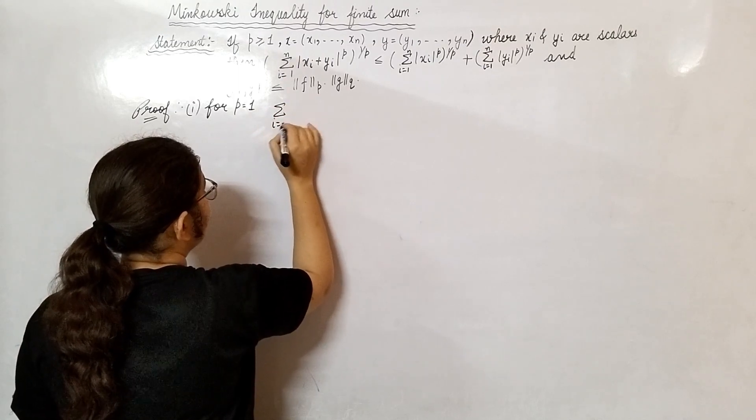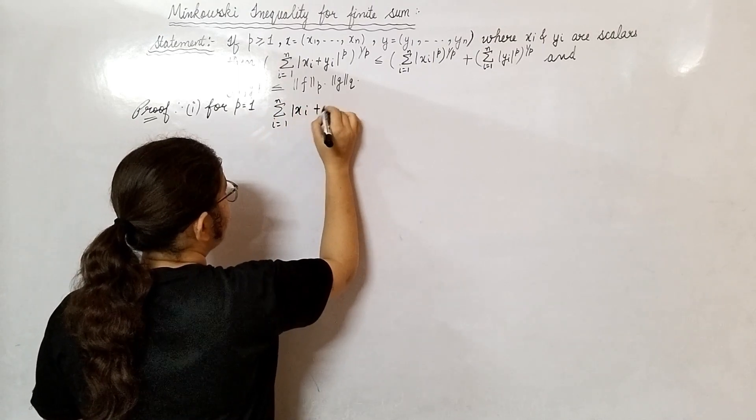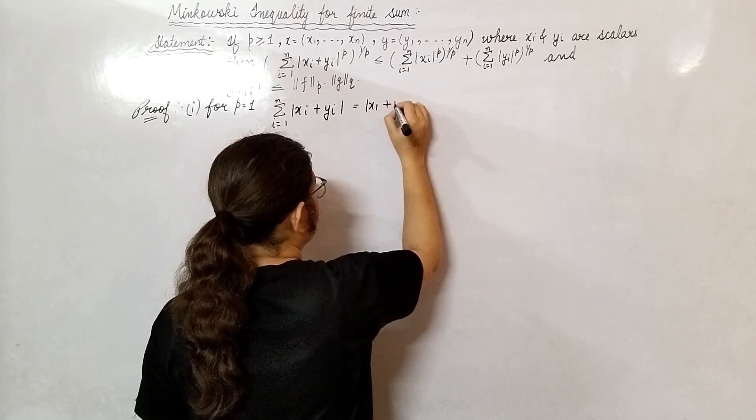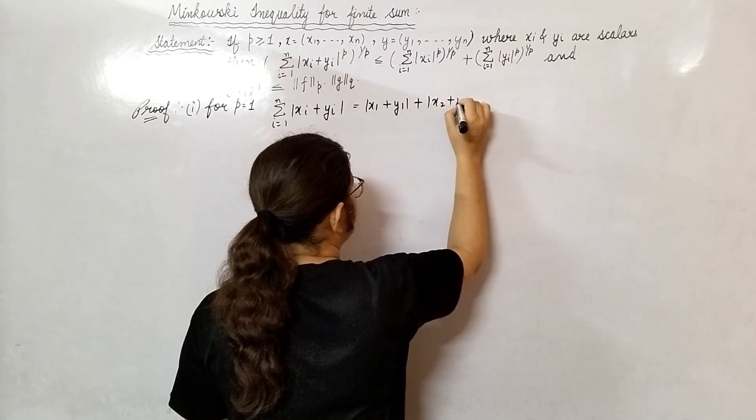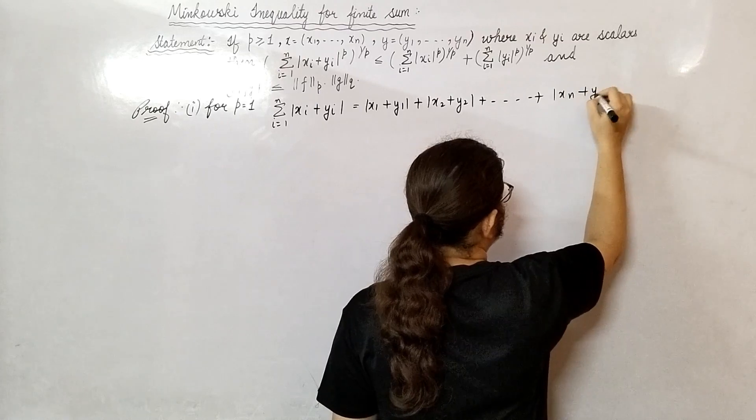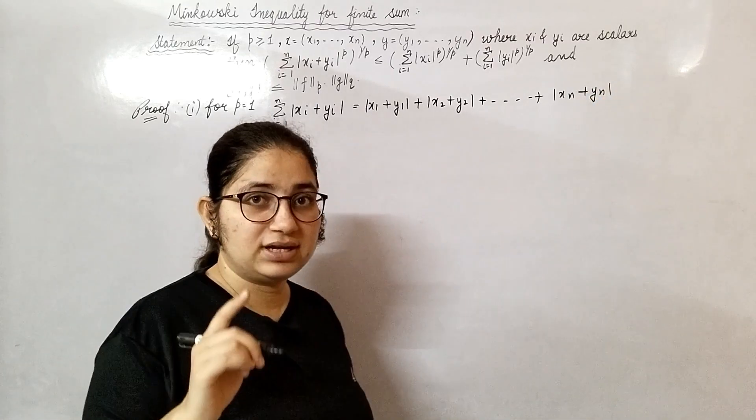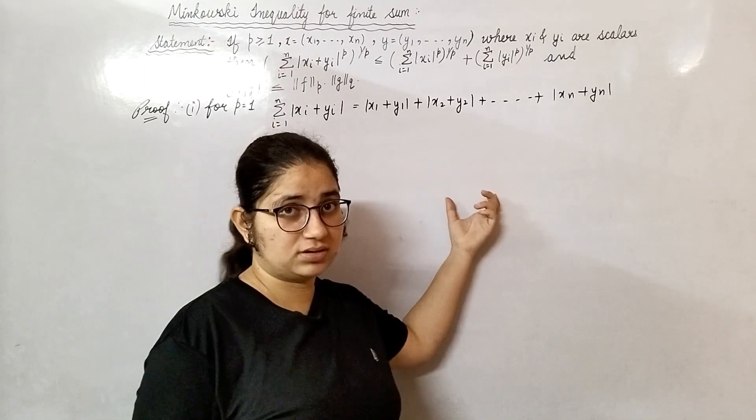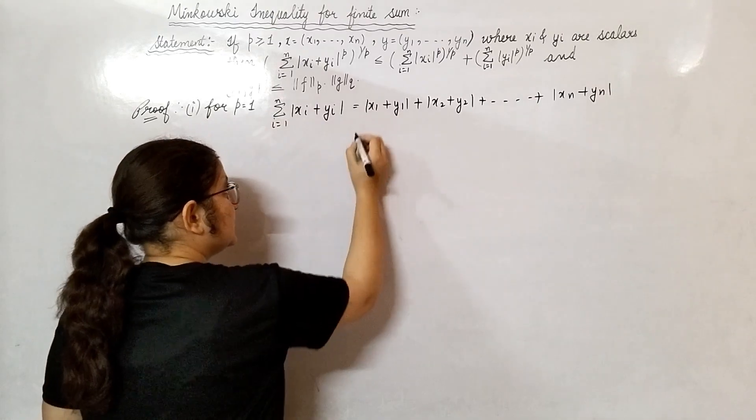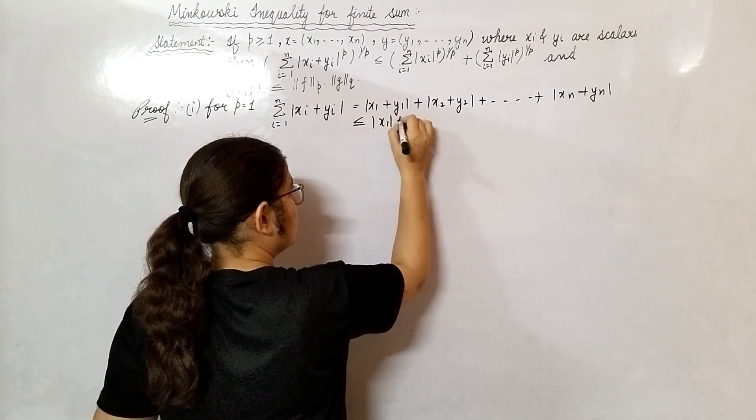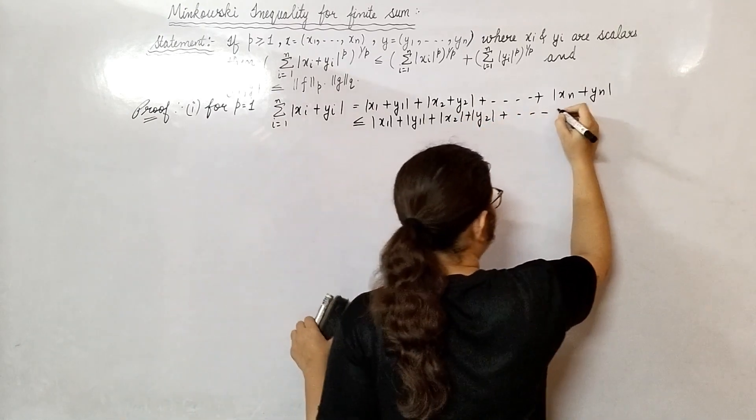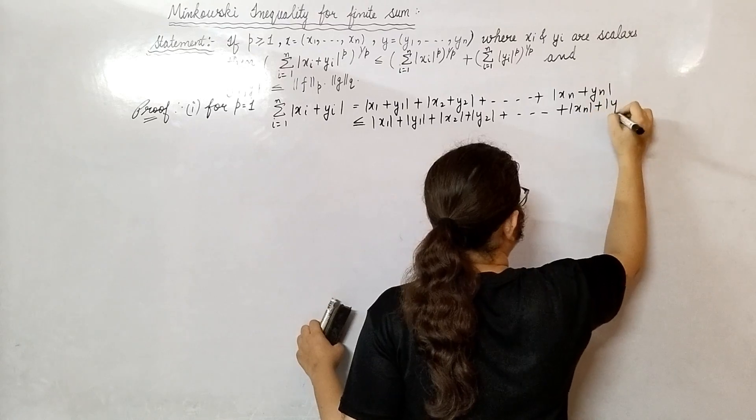We have summation i from 1 to n, |x_i + y_i|. I can write this as |x_1 + y_1|, |x_2 + y_2|, up to n tuples. Now you know in real space, when you open this modulus, it's less than or equal to, and modulus of two separate. So in the same way, I will write this as |x_1| + |y_1|, |x_2| + |y_2|, and so on, |x_n| + |y_n|.